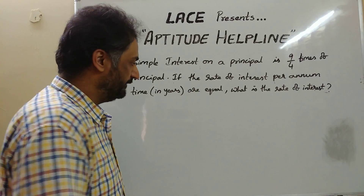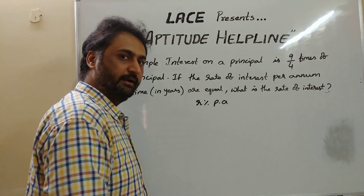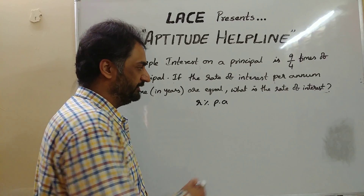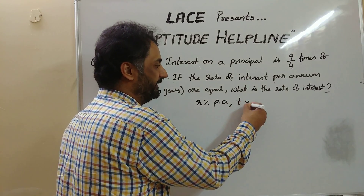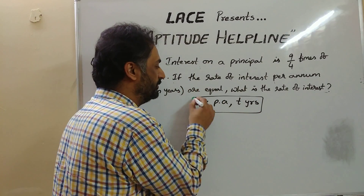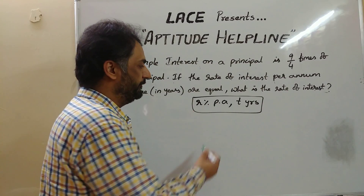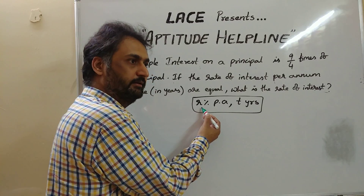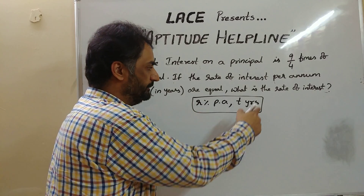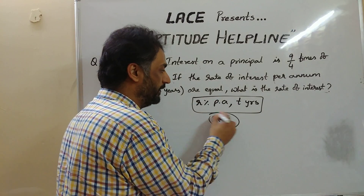Whenever we take R% per annum as the rate of interest in simple interest, and take a loan for T years, it means we pay R% every year for T years. So for T years, the total percentage of penalty paid will be R × T percent.